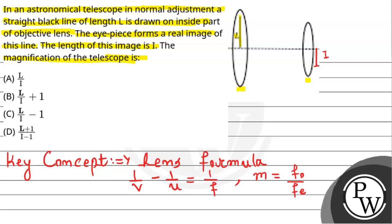According to the question, we know that in normal adjustment the final image is formed at infinity. Here the distance is F_O plus F_E. From the image formation of the straight black line by the eyepiece,